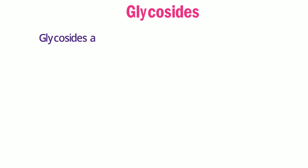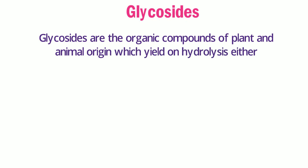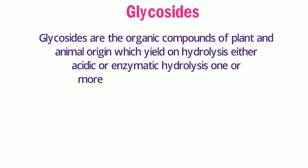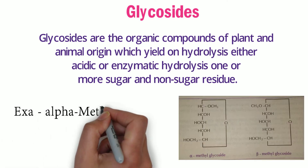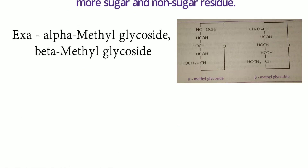Glycosides are the organic compounds of plant and animal origin which yield, on hydrolysis — either acidic or enzymatic — one or more sugar and non-sugar residues. Examples include alpha-methyl glycoside and beta-methyl glycoside.